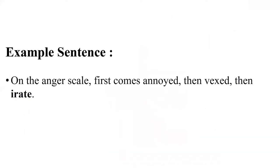On the anger scale, first comes annoyed, then vexed, then irate. The first syllable of irate is IR for ire, related to the Greek word oistros which means 'thing causing madness.' When cartoon characters are irate, they are so mad that smoke comes out of their ears.